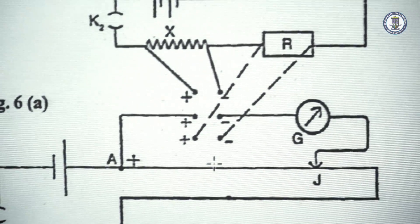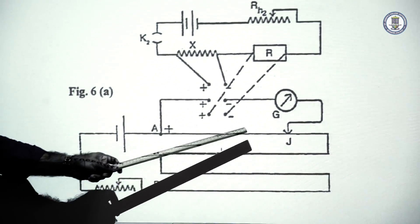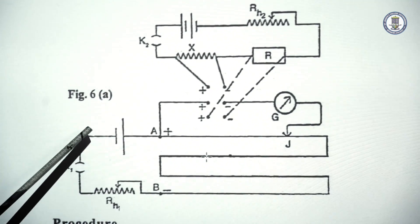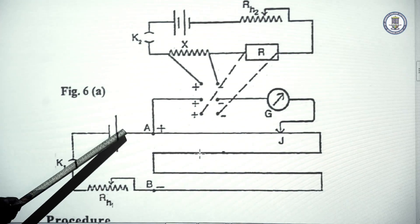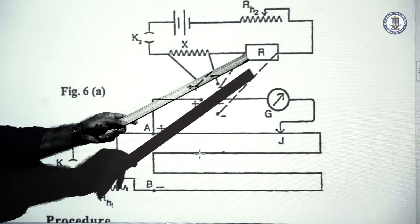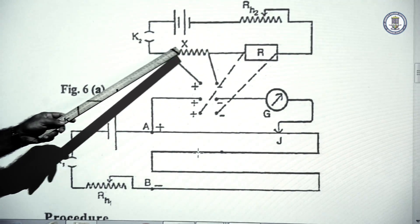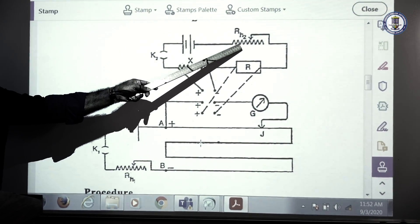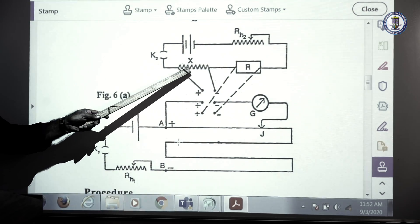In the circuit diagram, the potentiometer wire AB forms the primary circuit, connected to an accumulator e, a key, and a rheostat. In the secondary circuit, there is an ohm's law circuit with resistance x connected in series with r, a voltage source e, and a rheostat. By varying the rheostat, we can change the current in this particular circuit.